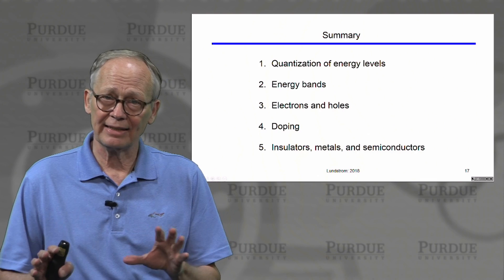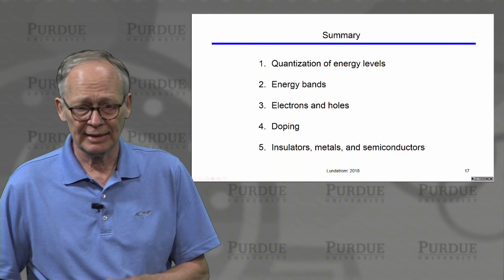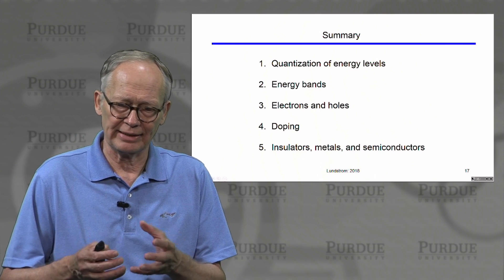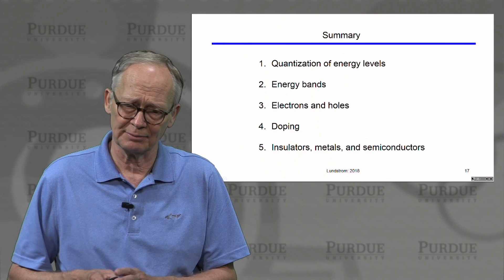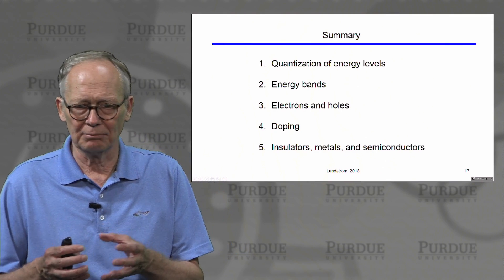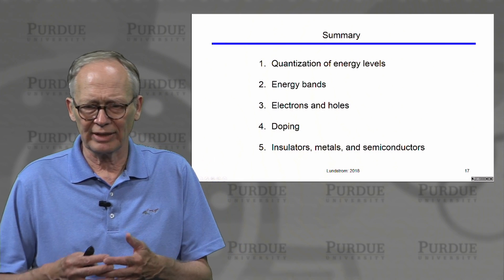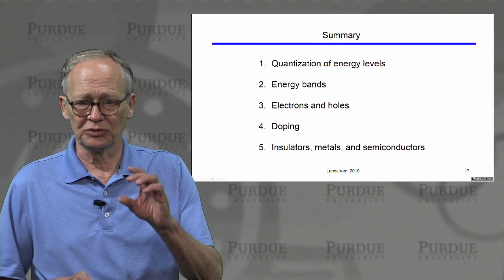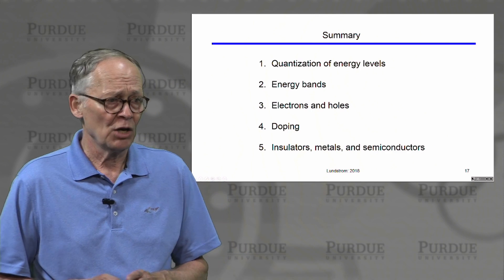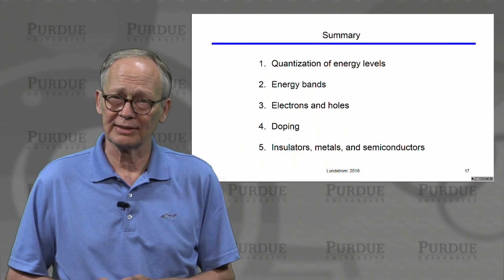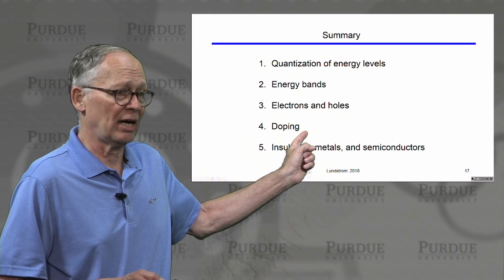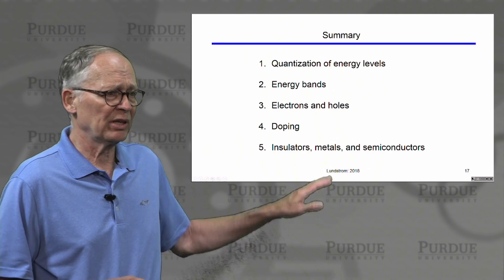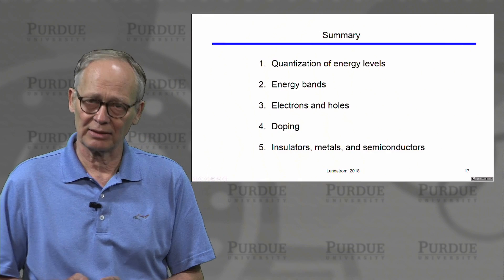To summarize the key concepts from this unit: energy levels are quantized in individual atoms, but when atoms are bound together into a crystal lattice, these levels overlap and broaden into bands — the valence band and the conduction band. We talked about two types of charge carriers: electrons in the conduction band and holes in the valence band. We talked about how we can alter their concentration by introducing n-type or p-type dopants, and about the differences between insulators, metals, and semiconductors.